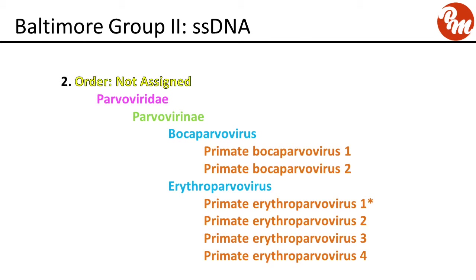The next group, order not assigned, is the family Parvoviridae, subfamily Parvoviridae. Genus bokeh parvo virus includes primate bokeh parvo virus 1 and 2. Genus erythro parvo virus includes primate erythro parvo virus 1 through 4; notably, species 1 is Parvo B19, which can cause hydrops fetalis in a pregnant woman.